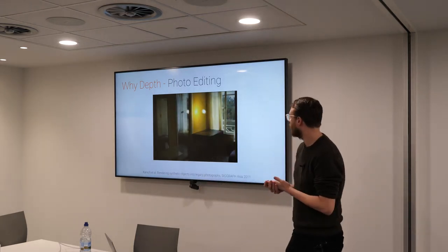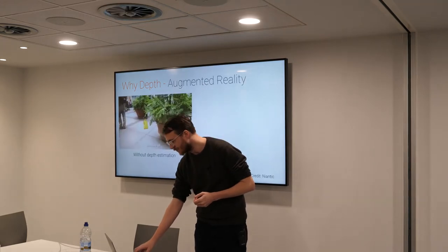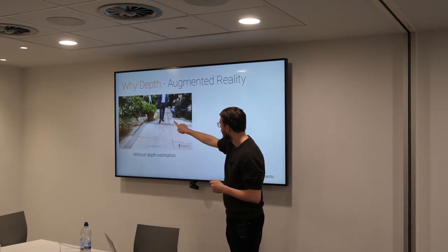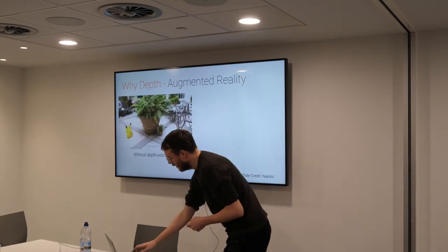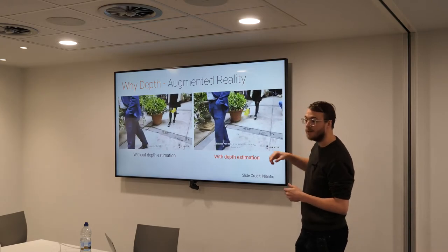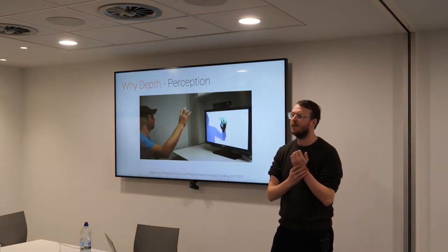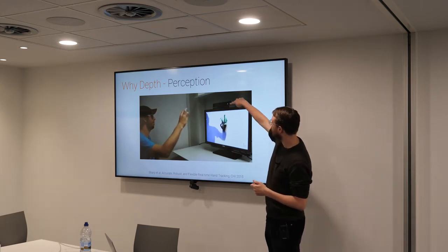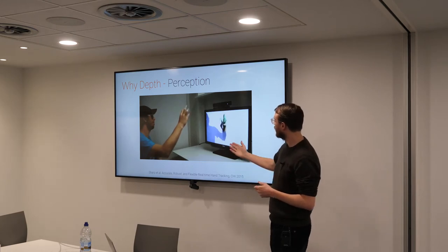There are many reasons why you might want to actually have depth. Photo editing is one of them — we can start doing things like relighting. Augmented reality is another application. If you look at the video on the left, you'll notice that the little Pikachu is running around, but he's just pasted onto the video, so it looks artificial because there's no notion of occlusion or running behind something. If we're able to reason about depth and some kind of notion of layers or occlusions, he's now actually running behind things you might perceive to be behind him. Perception is another situation where depth is really valuable, such as body pose estimation using structured light or depth cameras.